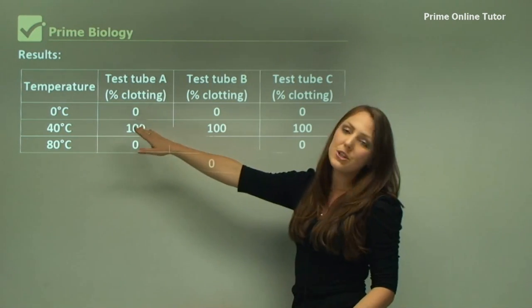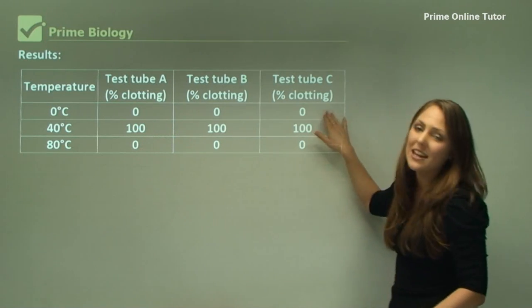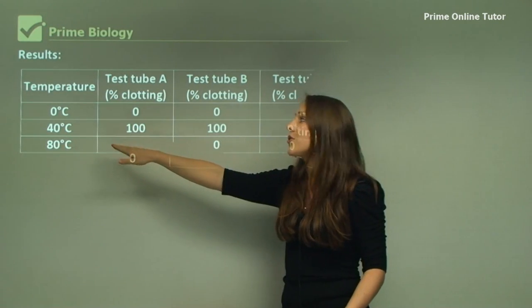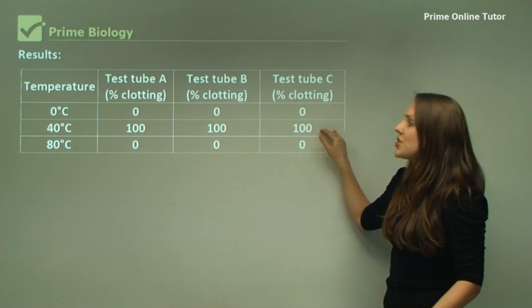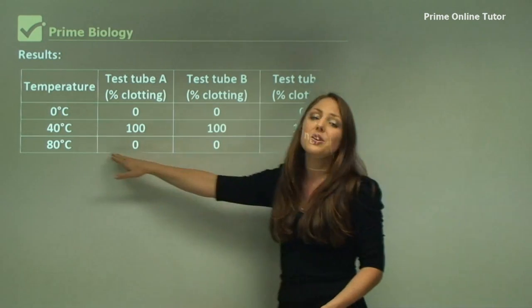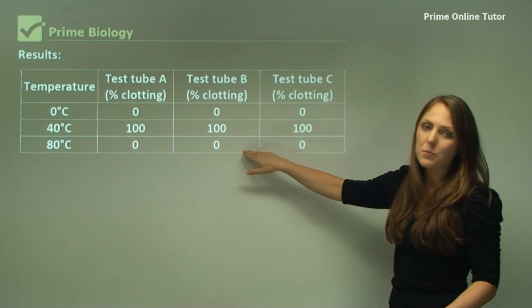You can see here we've got zero degrees, zero clotting in each test tube. At 40 degrees we have a hundred percent in each test tube. And at 80 degrees water bath you have zero percent clotting in each test tube.